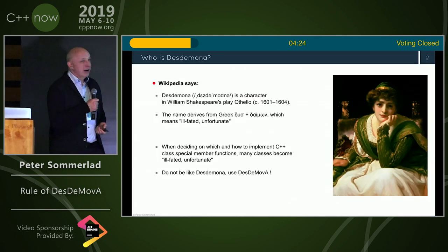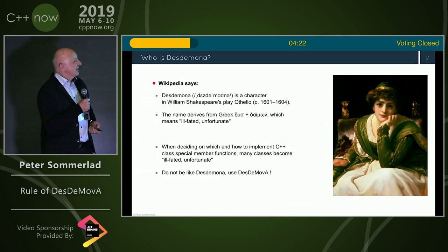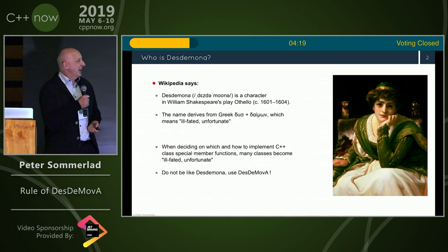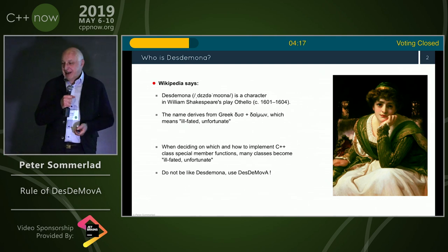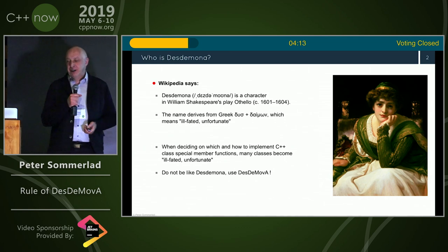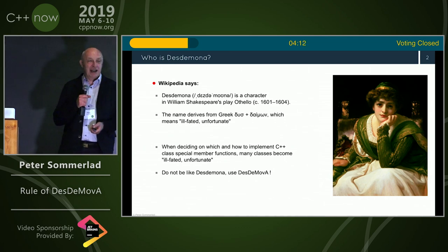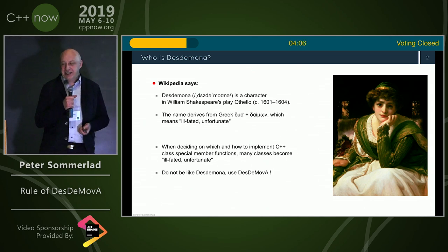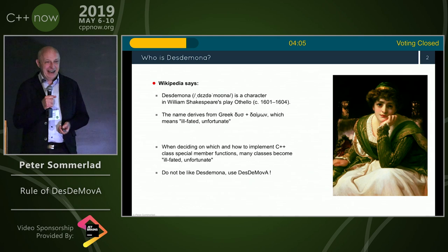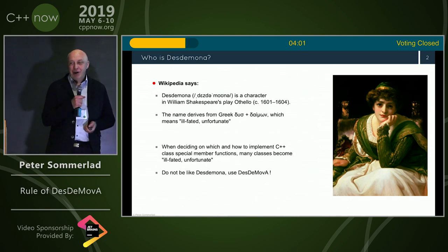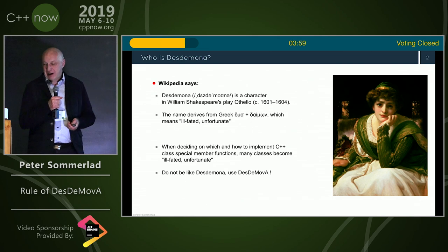So if we look at Wikipedia and slightly mistype Desdemona, we learn that Desdemona is a figure in Othello — which is kind of ill-fated and tragic. My idea is you shouldn't write code that is tragic and ill-fated. So don't be like Desdemona, but use Desta Mova.